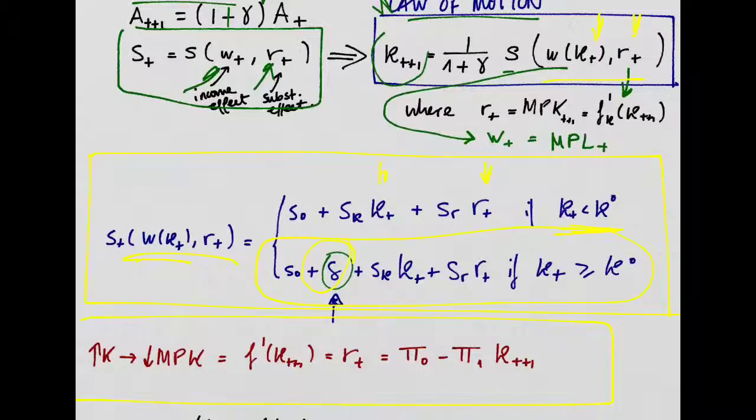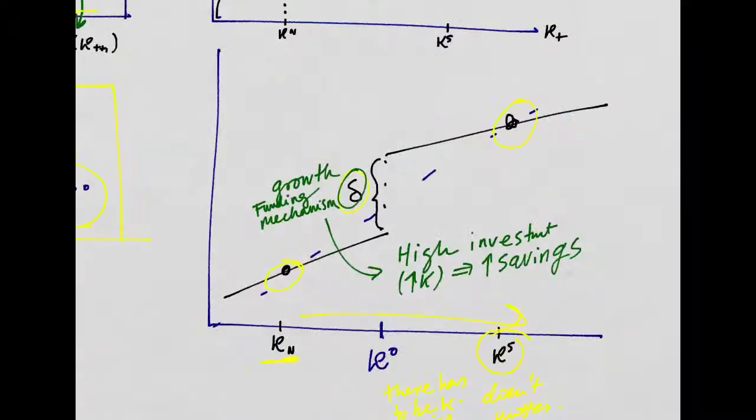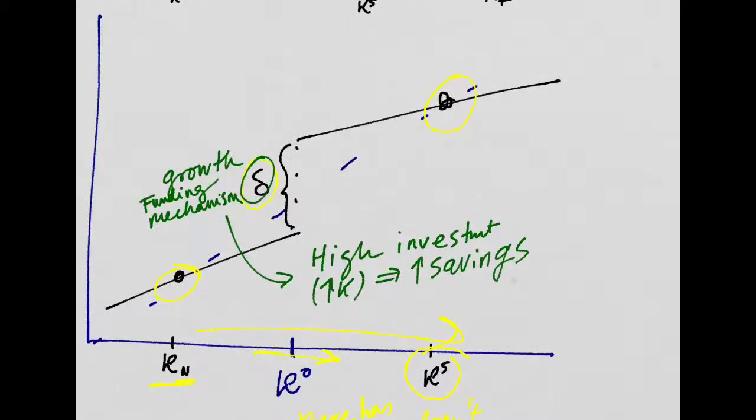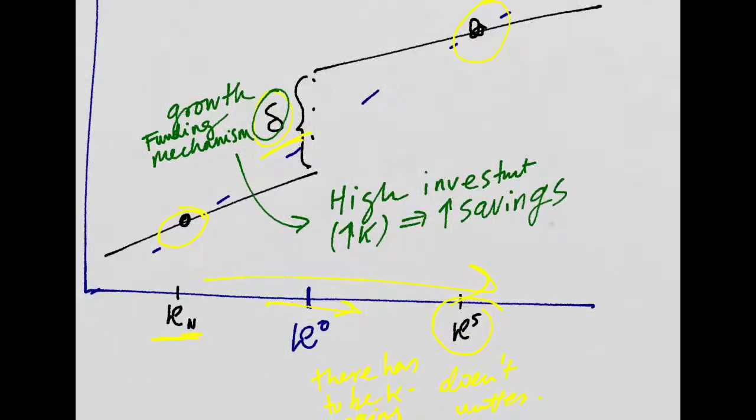Basically, if you pass this level of capital, which is this one here, if you pass this level of K0, you're going to see a huge increase in savings. The way they call it, they call this delta the growth funding mechanism. It's a way to model that when you have high investment rates, you can also have really high savings. Because after you pass some level of capital that you've been investing on, your savings rates will overshoot.